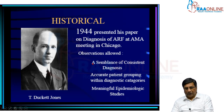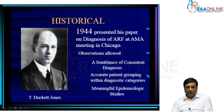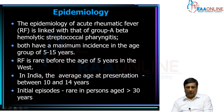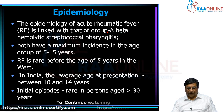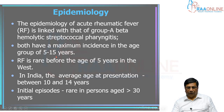Jones presented the basic criteria to diagnose acute rheumatic fever, which was subsequently modified with new information. The epidemiology of acute rheumatic fever is linked with Group A beta-hemolytic streptococcal pharyngitis. Both have a maximum incidence at ages between 5 to 15 years — very rare before age 5, and rare after 15.